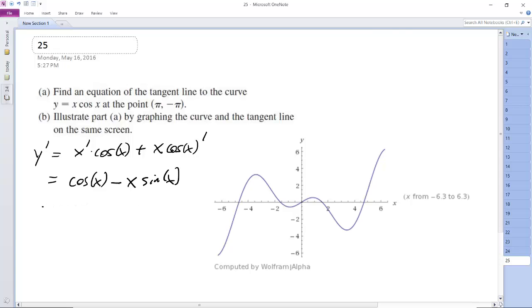So we plug in π, cosine of π minus x, actually take that back, minus π sine of π. So we get -1 minus π times 0, so we just get -1 for our slope.